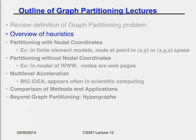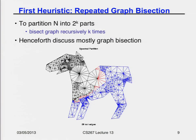Let me give an overview of the heuristics. The first heuristic is repeated graph bisection. All of our algorithms will tell you how to break a graph into two parts. Here's an example: I want to take this graph and break it into two parts, meaning I remove all the edges down the middle — blue is one partition, black is the other — and there aren't many edges across, so this is a good partition. If I need more than two parts, I'll just repeat the same algorithm recursively to each half.